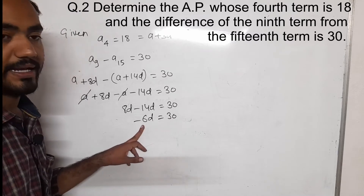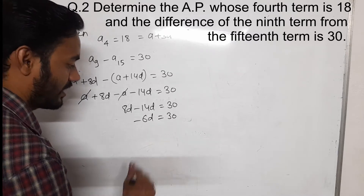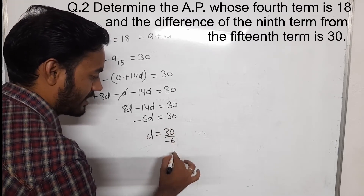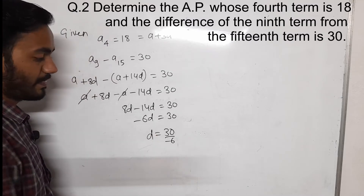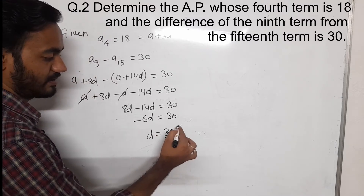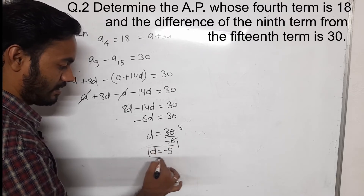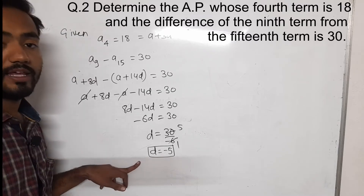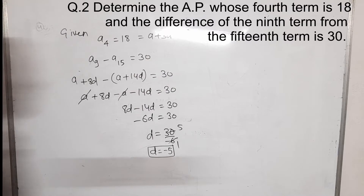Here minus 6 is in the multiply. When it goes to the other side it becomes divide, then D will be 30 divided by minus 6. It gets cancelled by 5 — 6 into 30 — then D will be minus 5. So the value of D is minus 5.